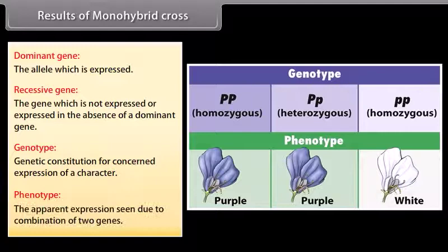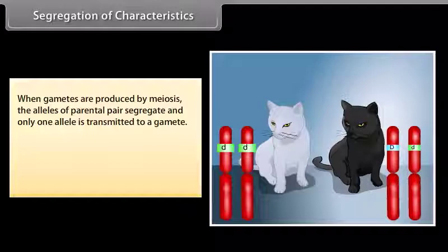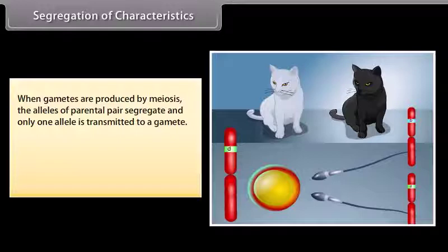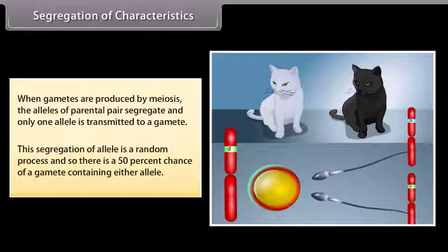Segregation of characteristics. When gametes are produced by meiosis, the alleles of a parental pair segregate, and only one allele is transmitted to a gamete. This segregation of alleles is a random process, and so there is a 50% chance of a gamete containing either allele.